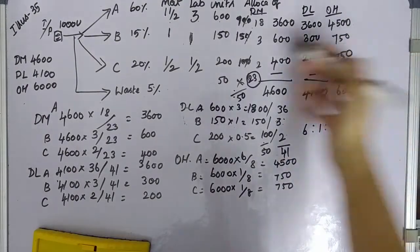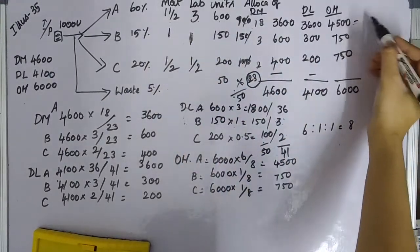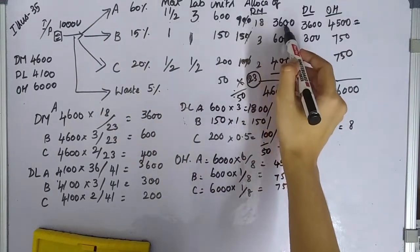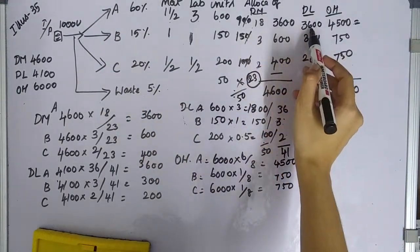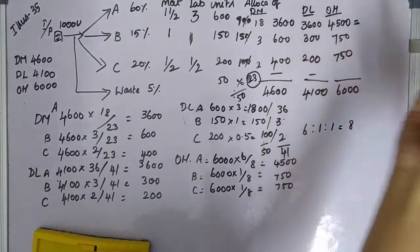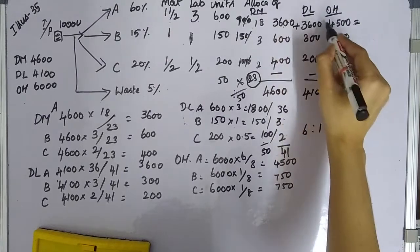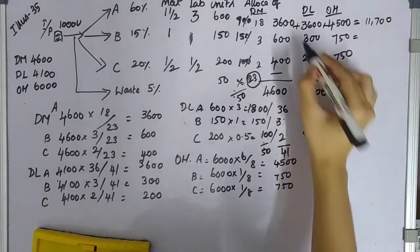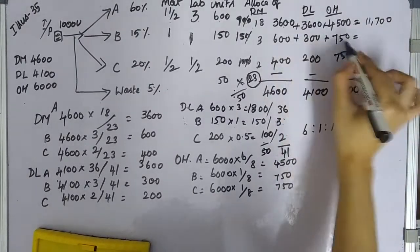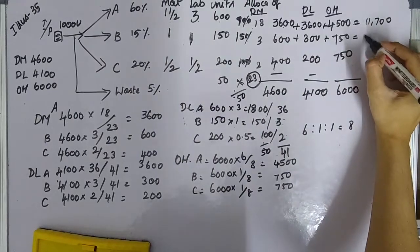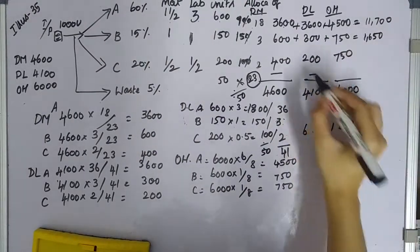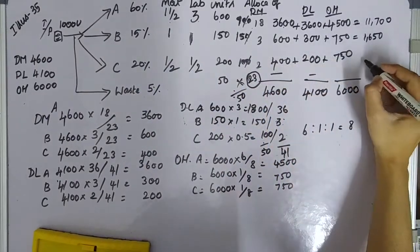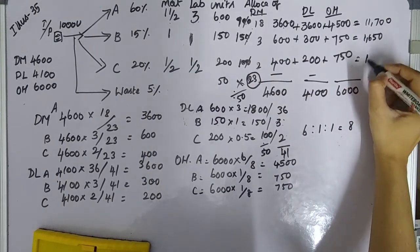Total cost for products A, B, C: Product A = 3600 + 3600 + 4500 = 11,700; Product B total expenses = 1650; Product C = material + labor + overhead = 1350. This completes the cost distribution between the products.